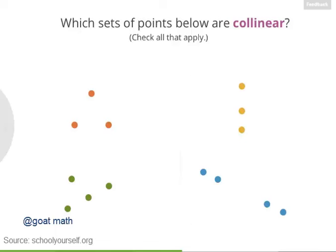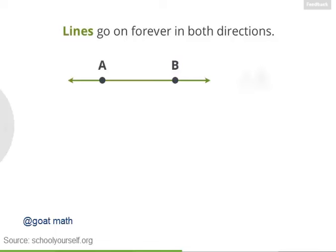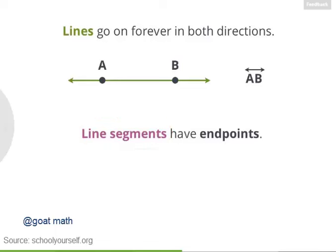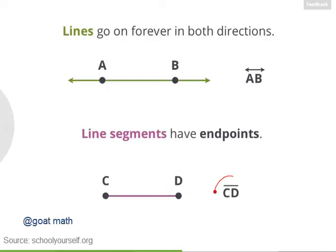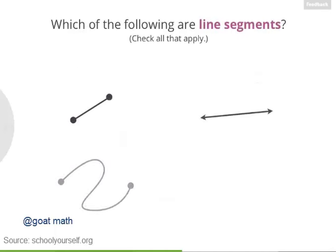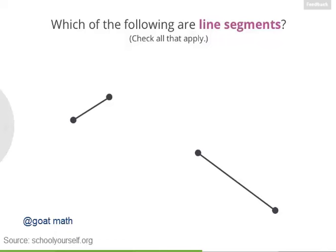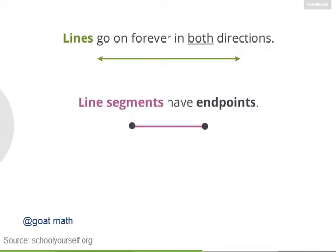These two sets of points on the right are collinear, and here are their corresponding lines. Lines go on forever in both directions and are named after any two points with a line symbol on top. Now when a line does not go on forever, it gets a different name — it's called a line segment. Line segments have endpoints: places where they end or stop. Here's an example of a line segment that stops at endpoints C and D. Line segments are named after their endpoints, so this is line segment CD, with a line segment symbol that has no arrowheads on either side.